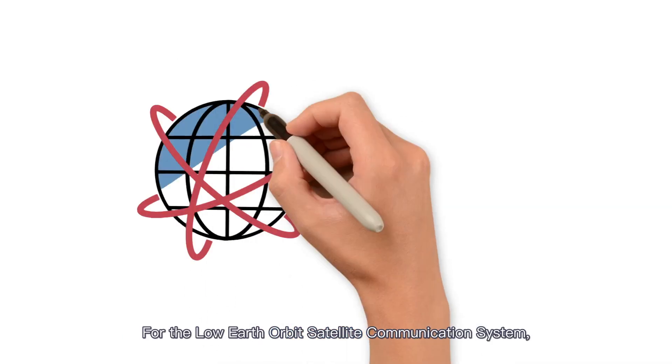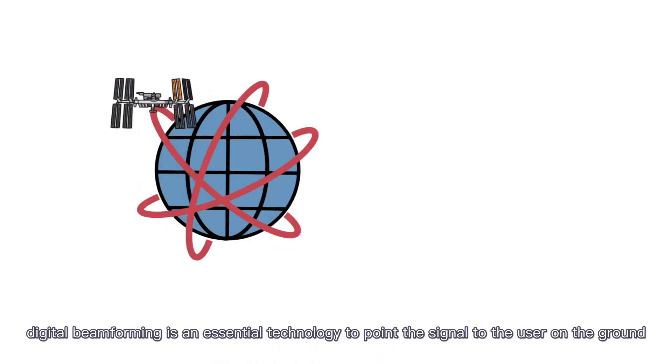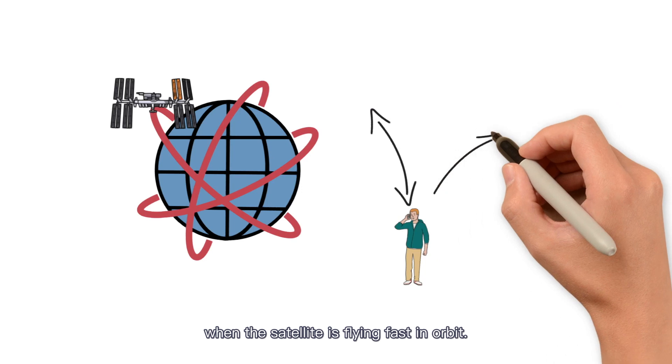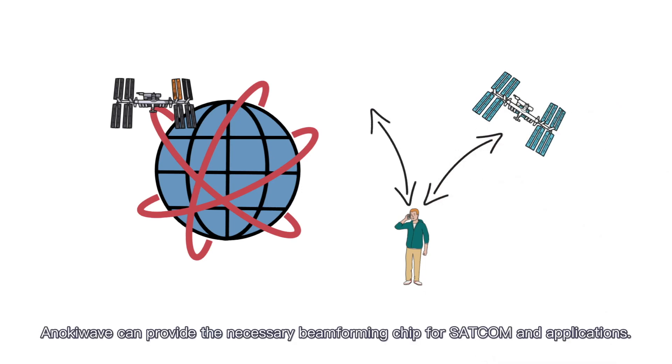For the low-Earth orbit satellite communication system, digital beamforming is an essential technology to point the signal to the user on the ground when the satellite is flying fast in orbit. Anokiwave can provide the necessary beamforming chip for satcom applications.